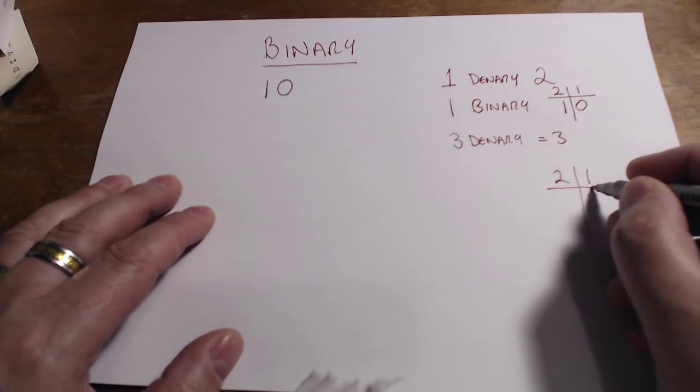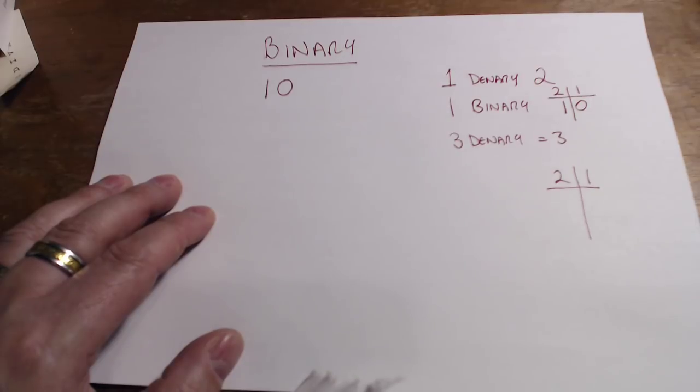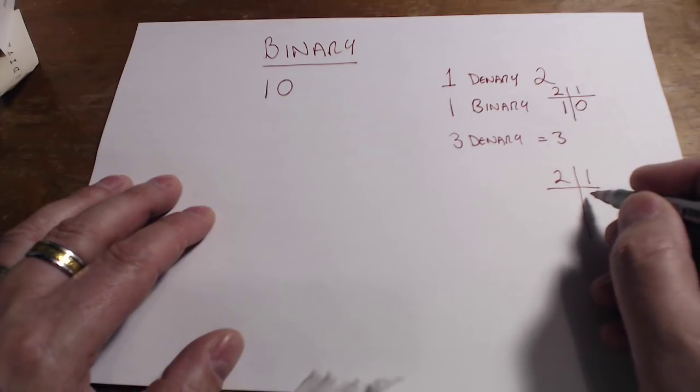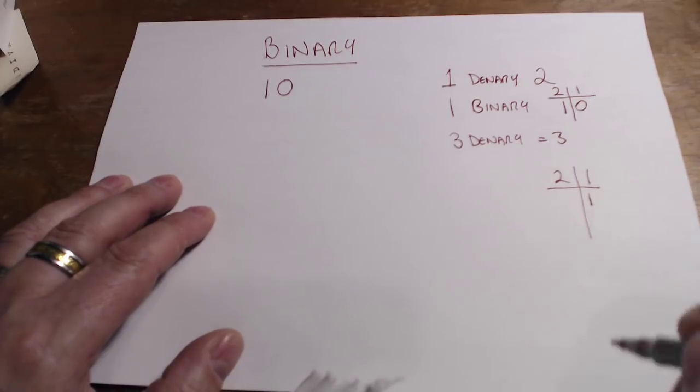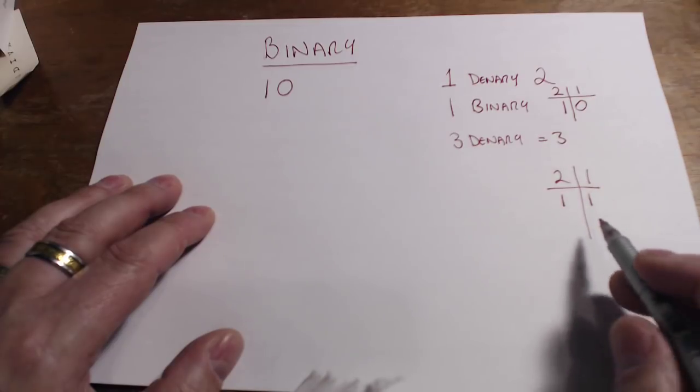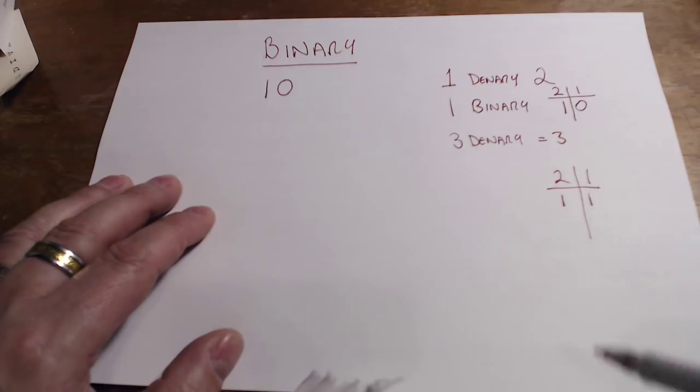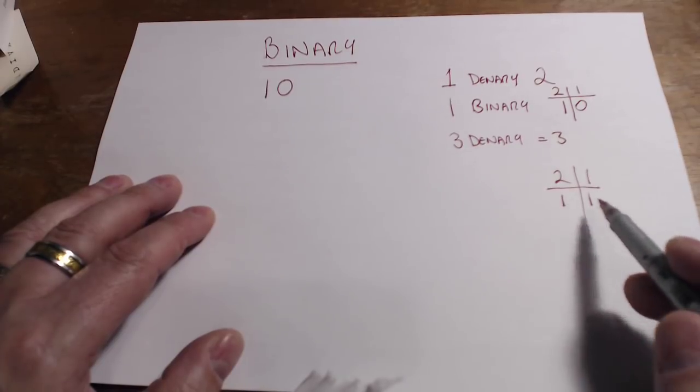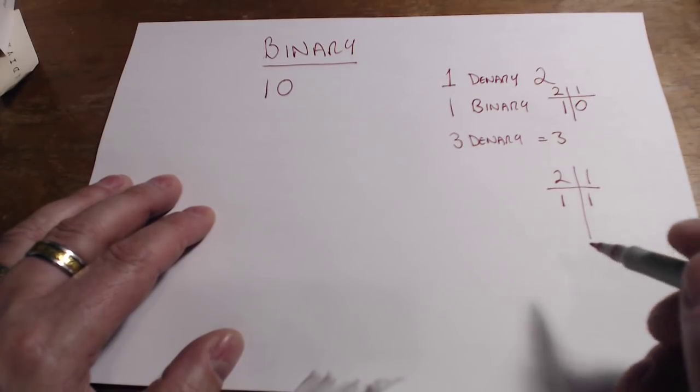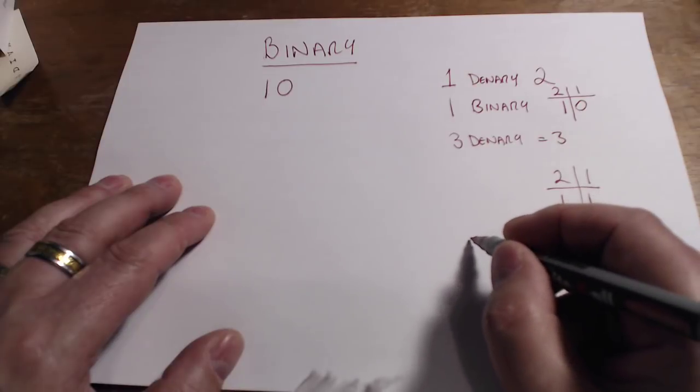My two, my one column—well, if I want to have the value three in denary written as binary, I would have one and one, because I know that the value in the first column is one, the value in the second column is two. Two plus one is three.